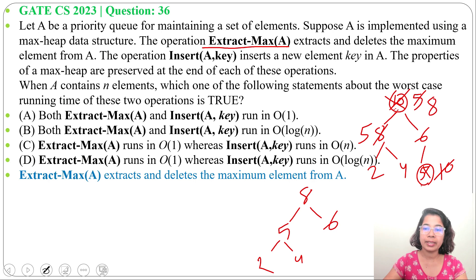For deletion, it is O(1). We know the root contains the maximum element. We are just deleting the maximum element, which is O(1).